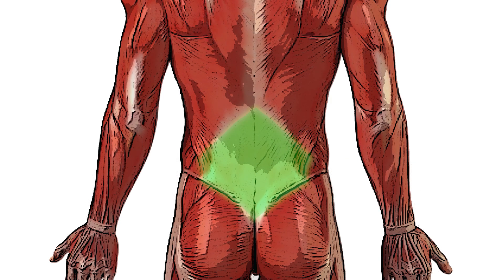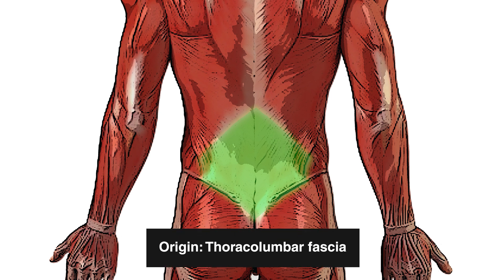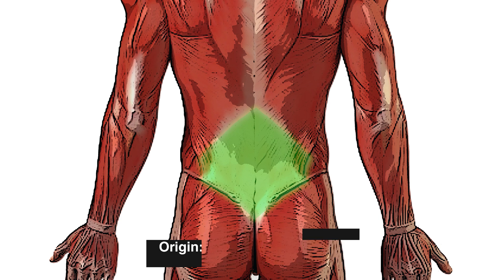Moving around to the posterior of the body, you can see this section highlighted in green. This section is the thoracolumbar fascia, which is essentially a diamond-shaped area of connective tissue, and this connective tissue is another origin of the transversus abdominus muscle.